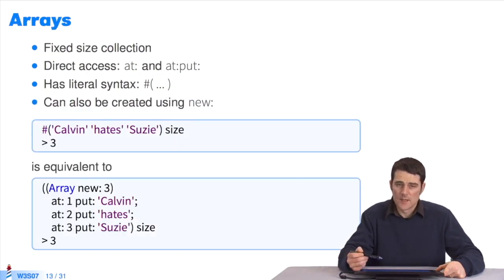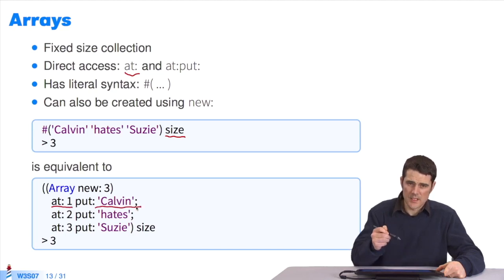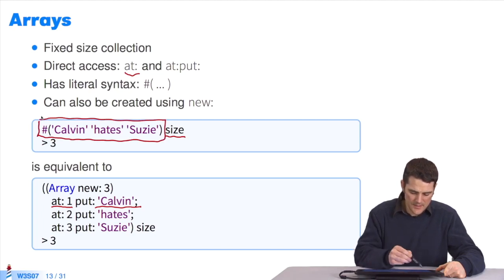Arrays are fixed size collections. You can query an array for its size. I send the message SIZE. You can directly access an array's element by sending AT:. I want the second element. You can modify the element at index 2 in the collection by sending AT:1 PUT: Calvin. I insert the string Calvin in cell 1. I can also ask the size. What's interesting about this example is that the same array has been built in two ways. First, a literal version, then a dynamic version. Here, I instantiated the class Array by myself and filled in every cell.